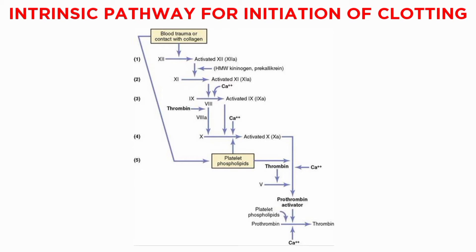Now let's talk about the intrinsic pathway for initiation of clotting. The second mechanism for initiating the formation of prothrombin activator begins with trauma to the blood or exposure of the blood to collagen from a traumatized blood vessel wall. The blood trauma causes activation of factor 12 and release of platelet phospholipids.